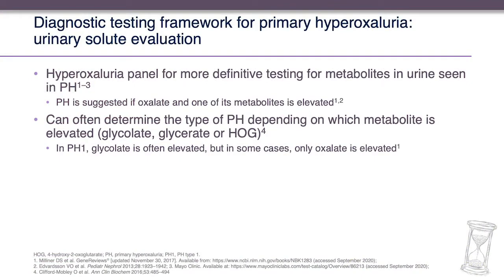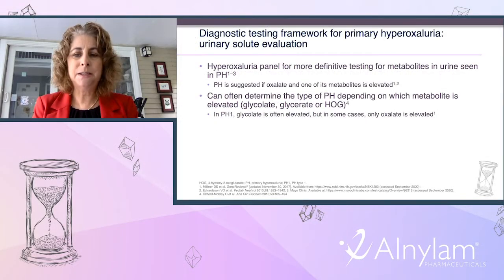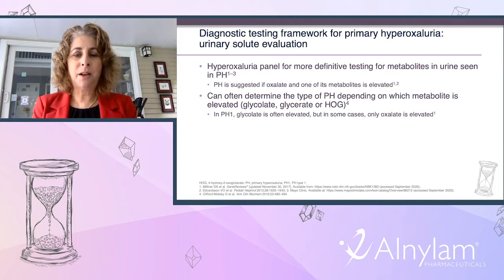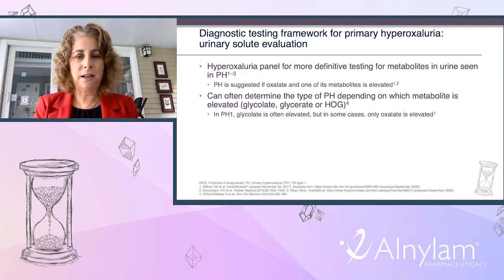During urine testing, you can send a hyperoxaluria panel for more definitive metabolite testing. Primary hyperoxaluria is suggested if oxalate and one additional metabolite is elevated. The elevated metabolite helps determine which type: in type 1, glycolate is often elevated but sometimes only oxalate is elevated; in type 2, glycerate is elevated; and in type 3, HOG is elevated. This panel can be sent on a random urine sample.